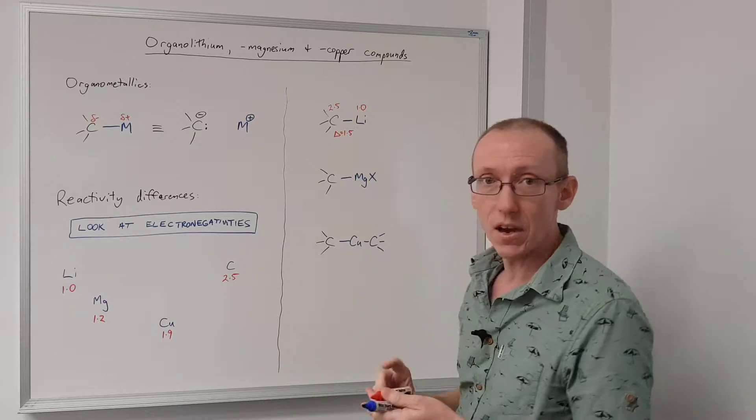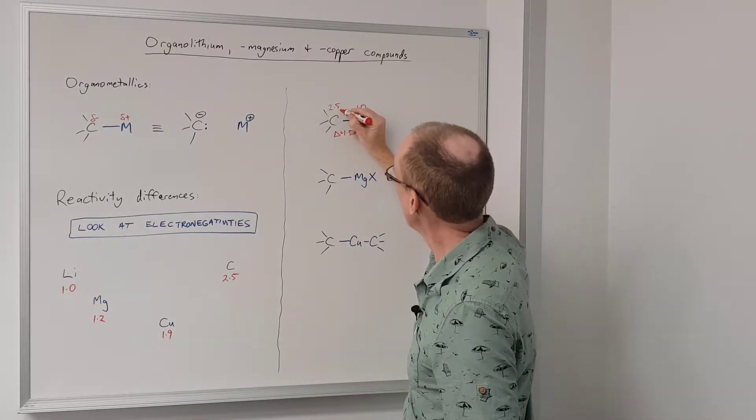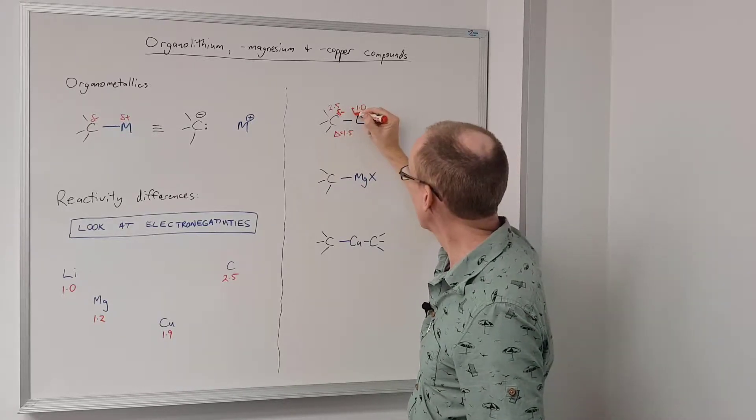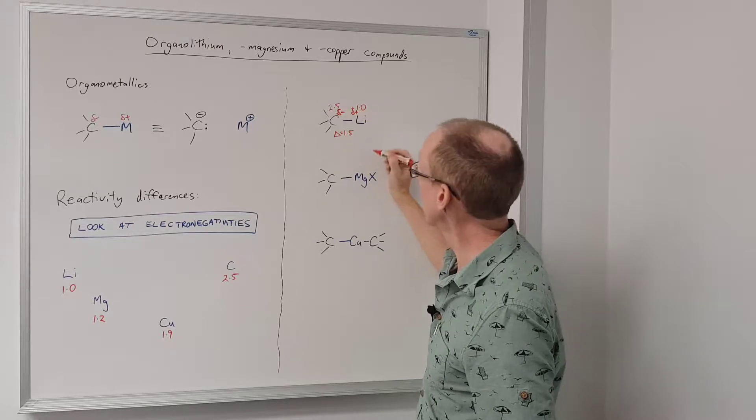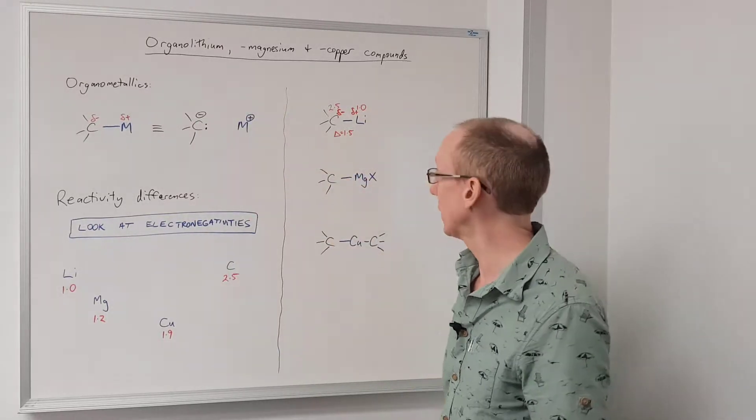And so therefore that's a very highly polarized bond. So we'll give it a very large and bold delta-negative at carbon and a very large and bold delta-positive at lithium. And it'll have a large amount of this carbanion character.